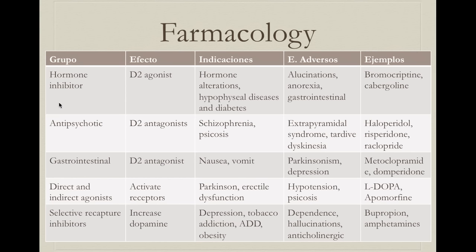For antipsychotic treatment, we use D2 antagonists — drugs that bind to the D2 receptor and prevent its function. These are used in schizophrenia and psychosis. The problem is that since dopamine is also essential for movement, D2 blockade can cause extrapyramidal syndrome (like Parkinson's in a previously healthy patient) and tardive dyskinesia. Main examples are haloperidol, risperidone, and raclopride.